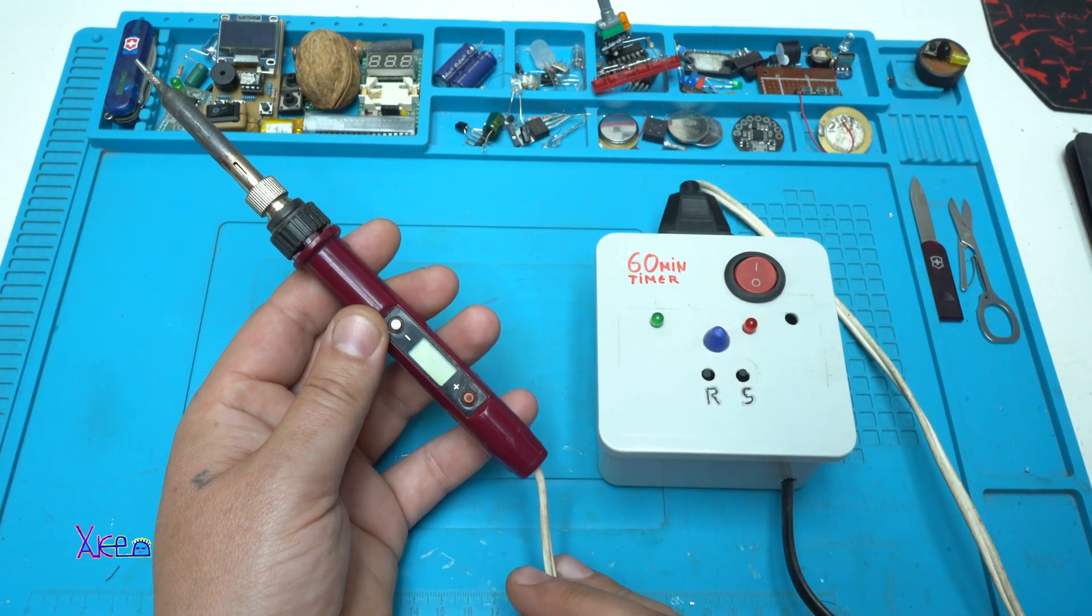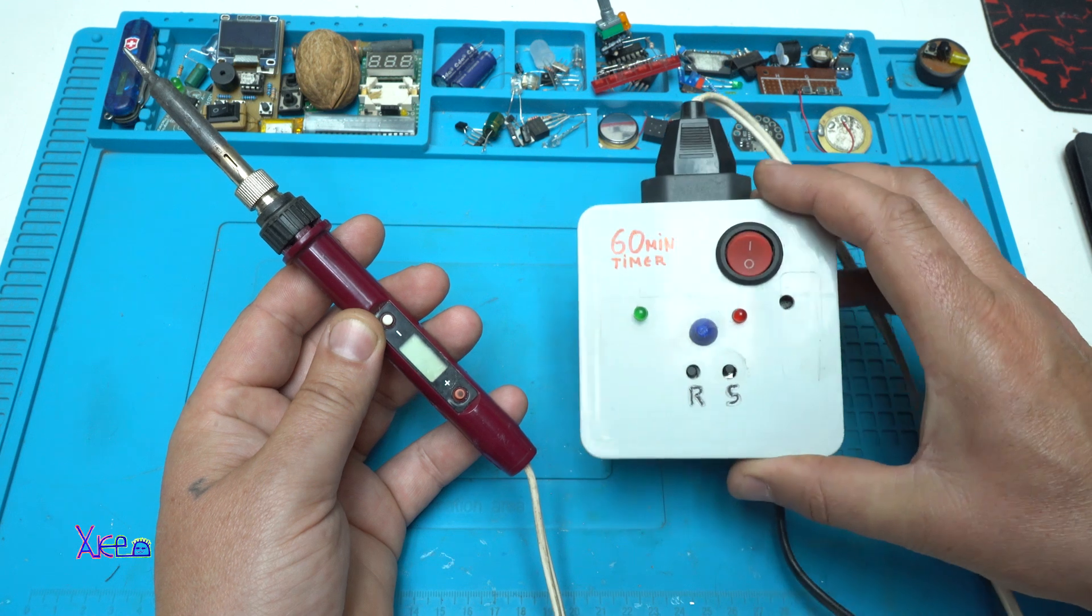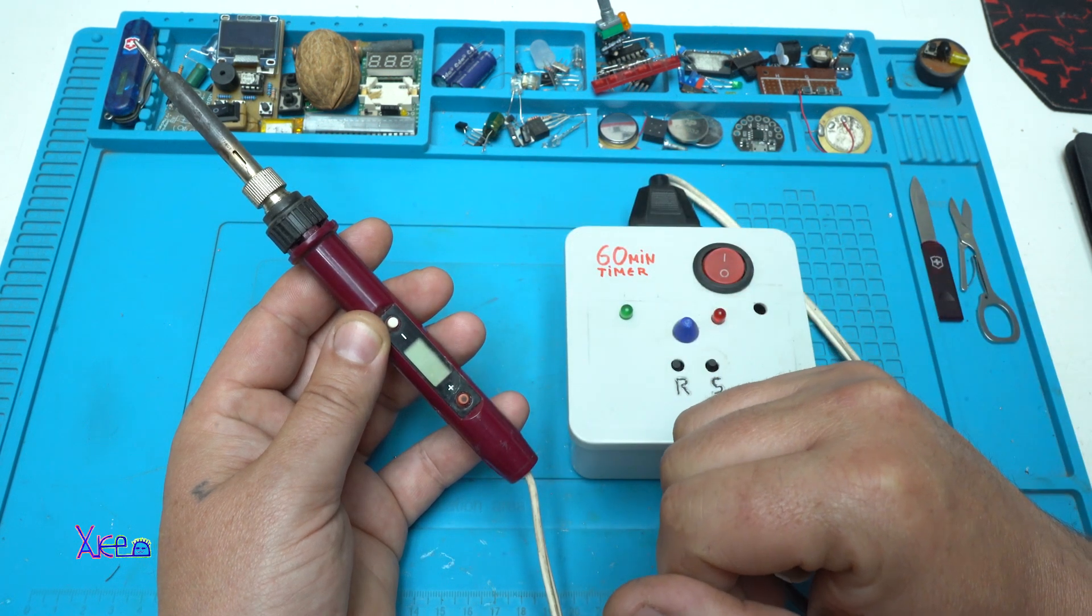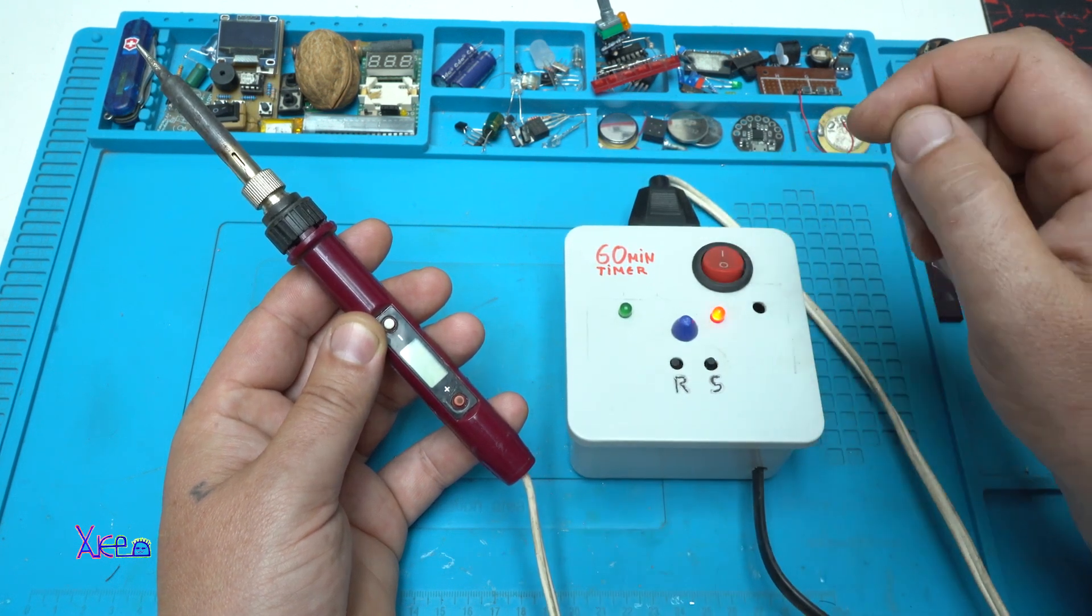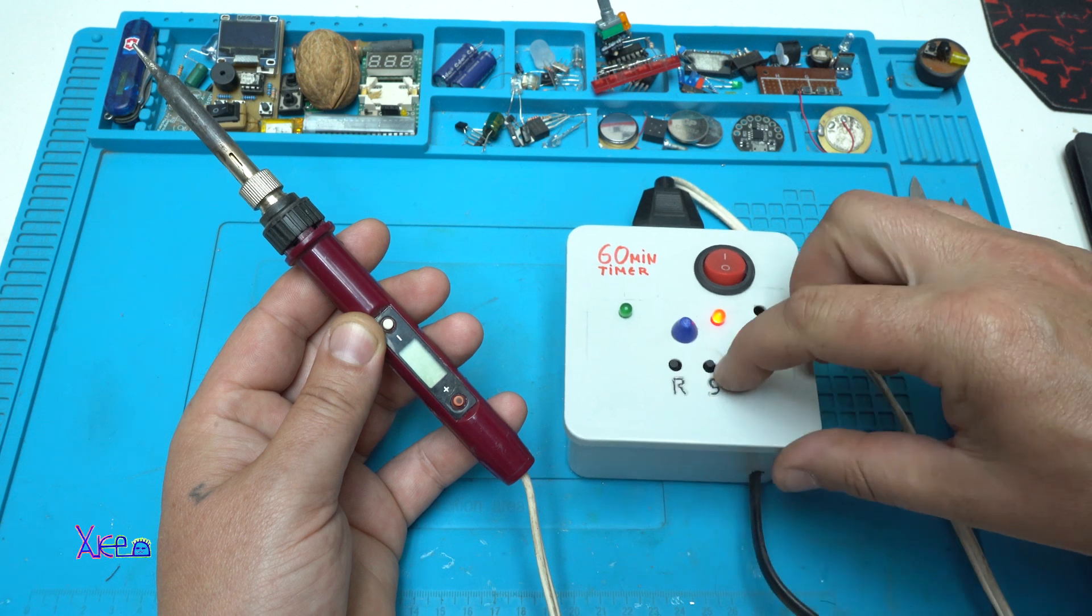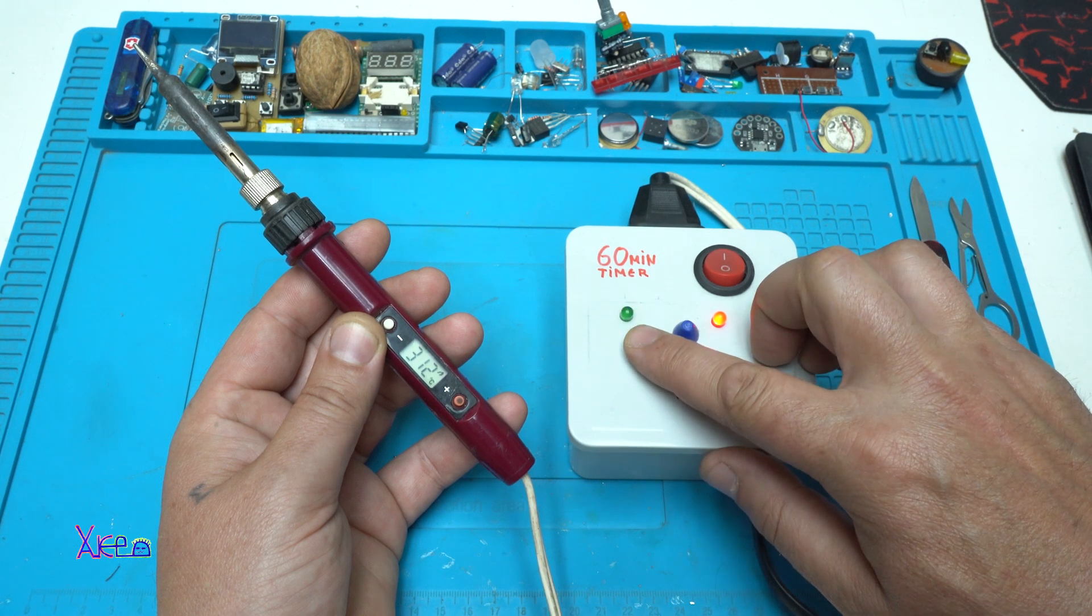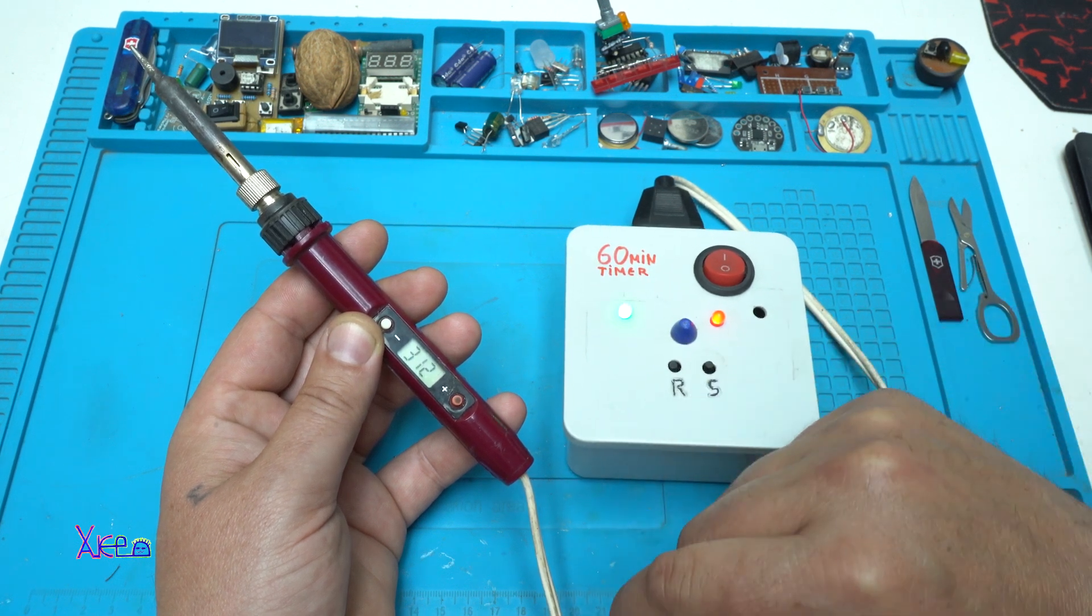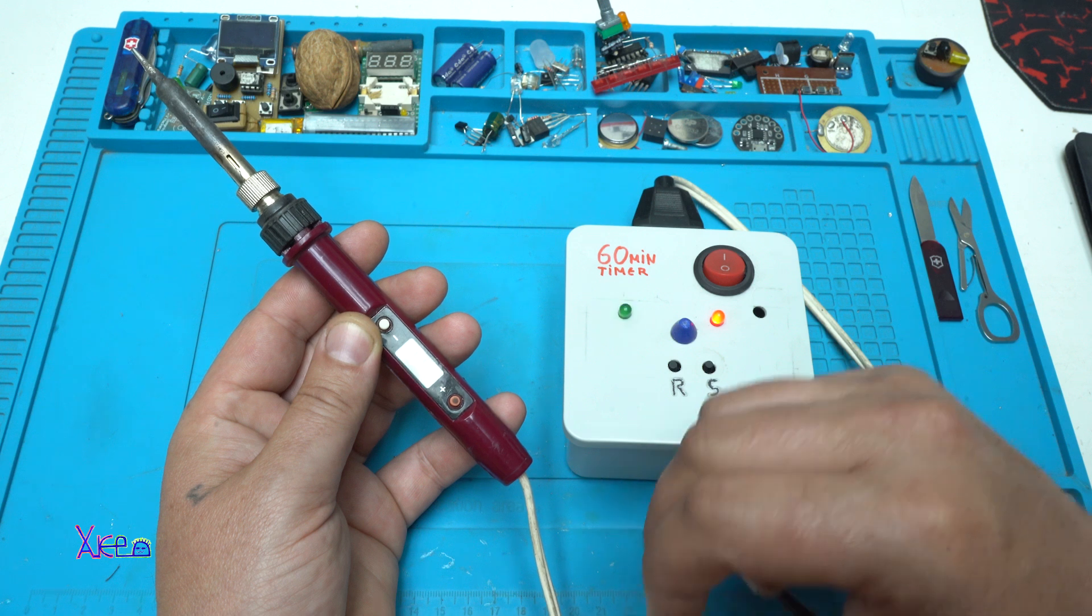Next thing that I recommend is to build auto timer off. I have built soldering iron and to protect from leaving to work for hours maybe days. Turning on the red means that the... After 60 minutes the soldering iron turn off.